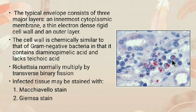The purple-colored cells are the host cells and the red-colored cells are the rickettsial bacterial cells.